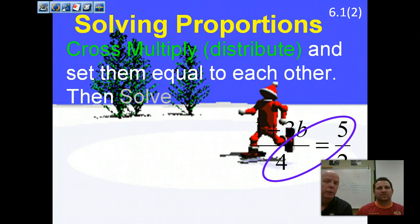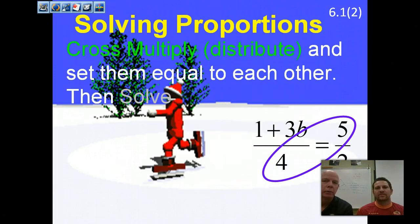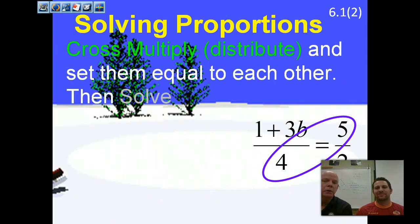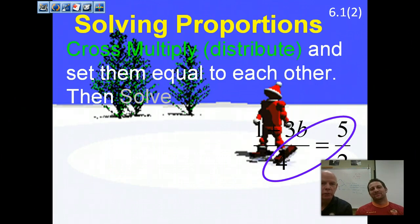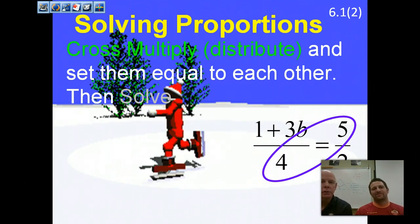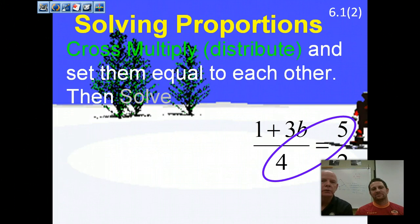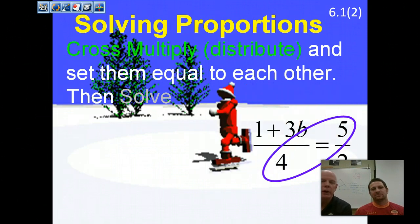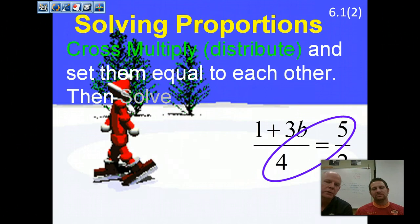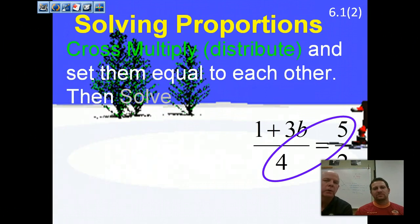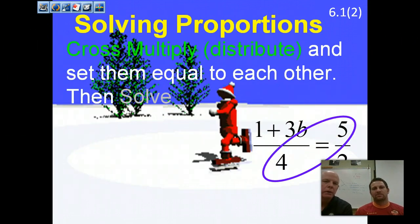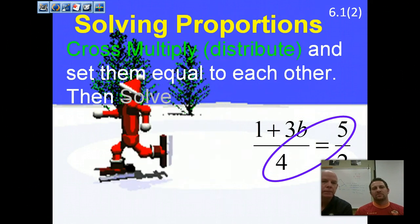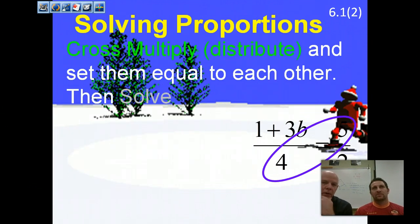Solving proportions — you should have done this in algebra one or eighth grade math. If we take two ratios and set them equal to each other, that's called a proportion. The way we solve it is to cross multiply. If one ratio has more than one term in the numerator or denominator, you need to distribute through there, then set them equal and solve.